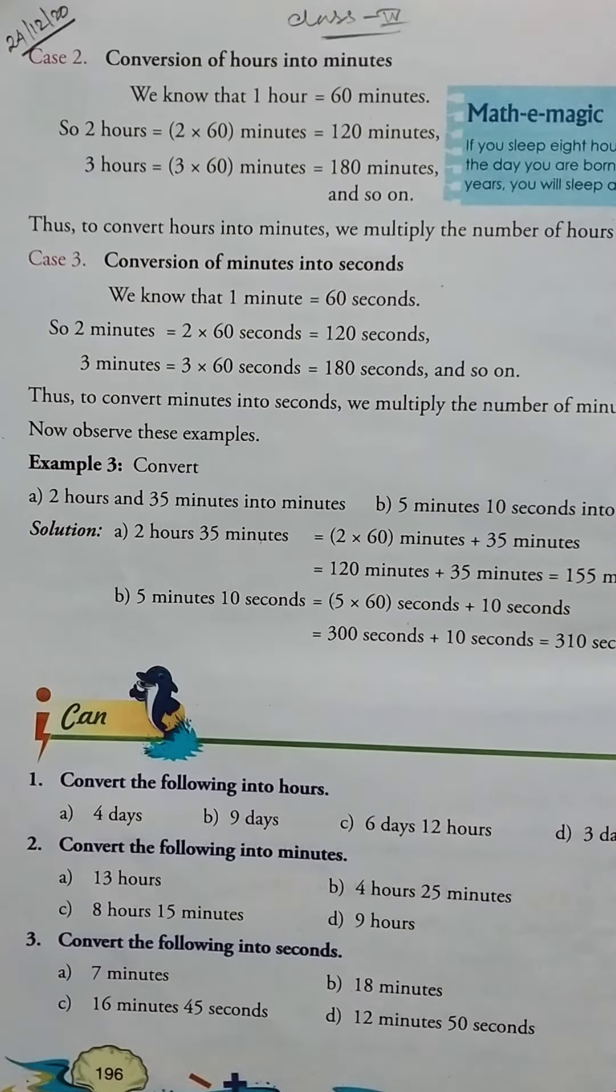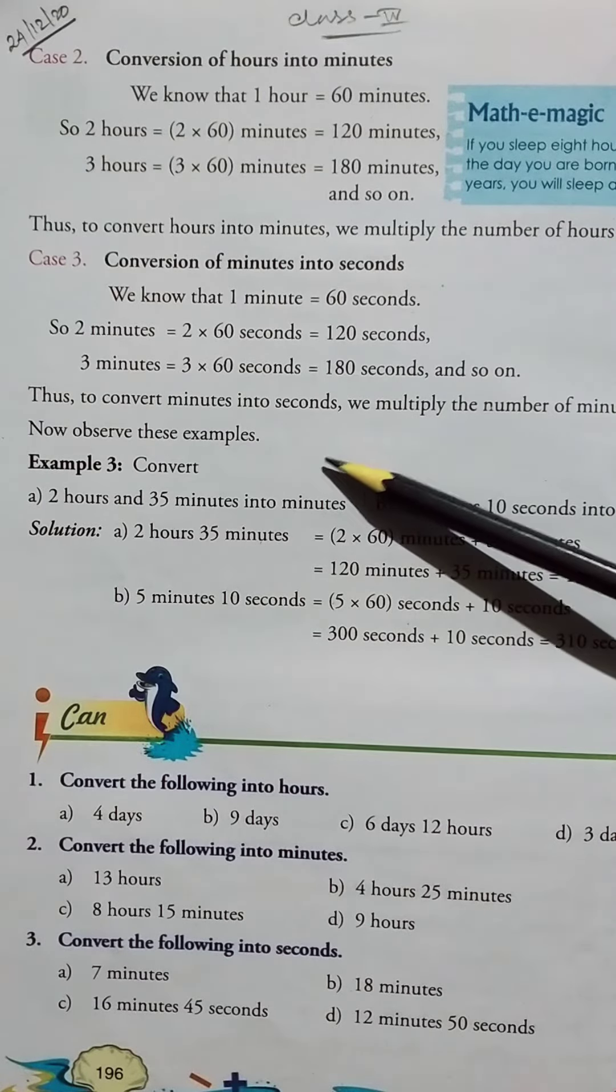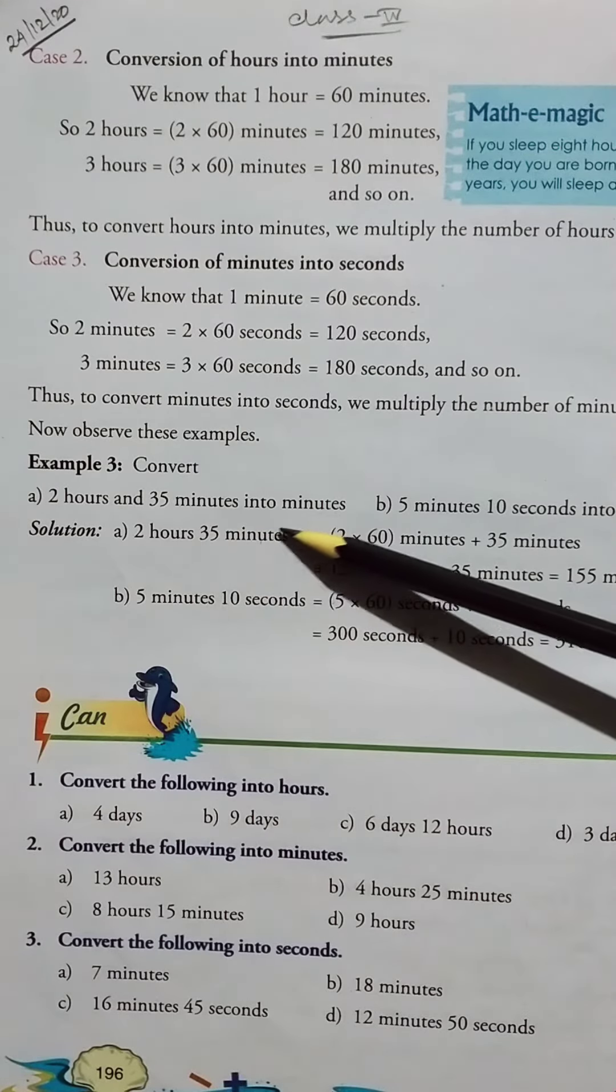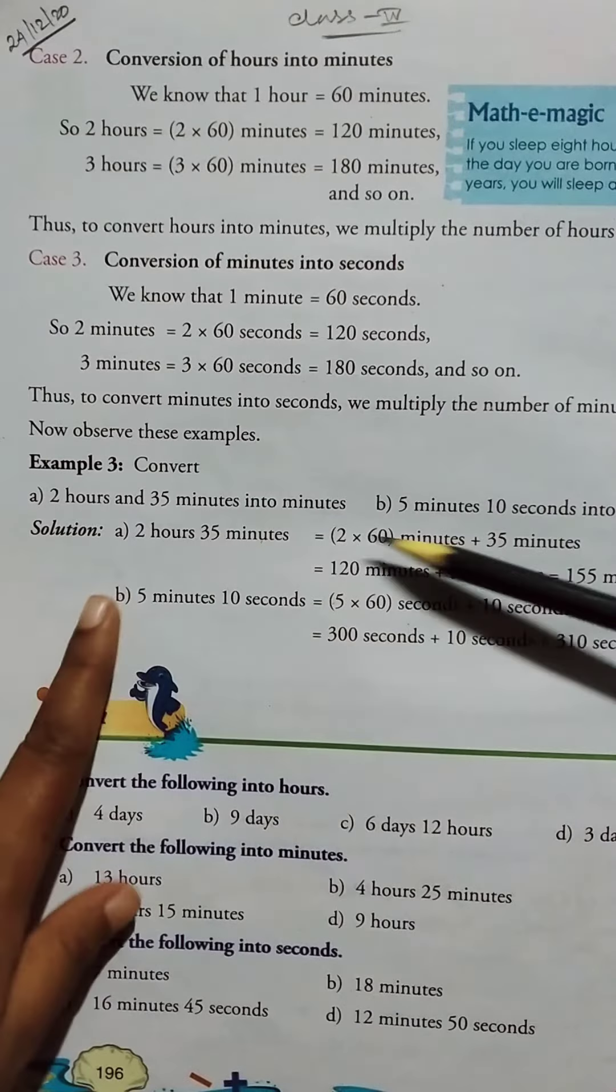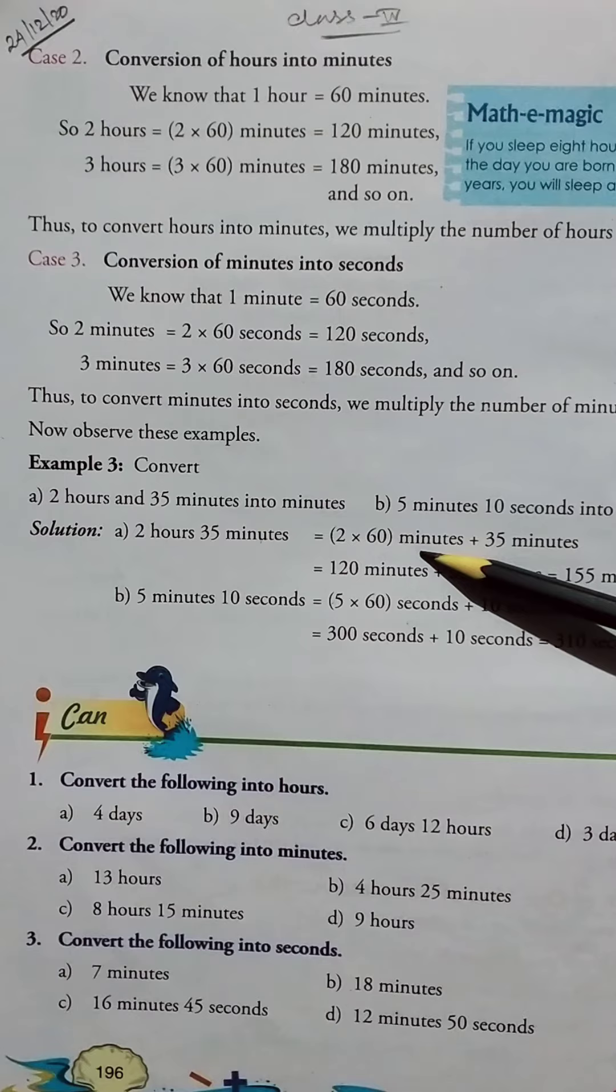Now observe these examples. Example 3: Convert 2 hours and 35 minutes into minutes. So here we convert hours to minutes: 2 into 60 minutes, and then plus 35 minutes.